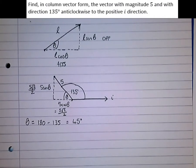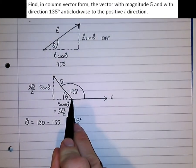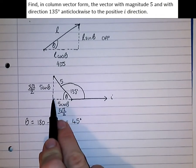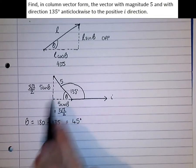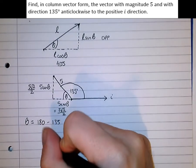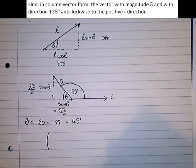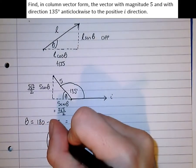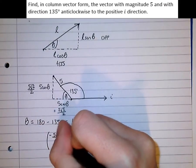OK, so we're almost there. So from the origin, we moved 5 root 2 over 2 to the left in the negative i direction. So our x component, or our i component, is going to be negative 5 root 2 over 2.